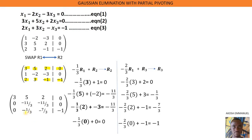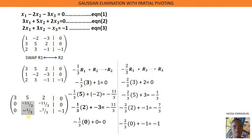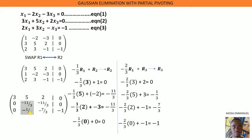We now have to reduce the second column as well. But before we do that, we check the second column and pick another pivot element — we choose the highest number in magnitude. The 5 is not part of the selection; we compare the sub-column entries. The magnitude of negative 11 over 3 is greater than the magnitude of negative 1 over 3, so we maintain row 2 as the pivot row.